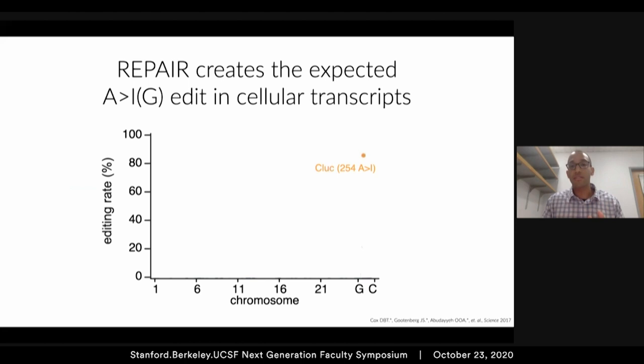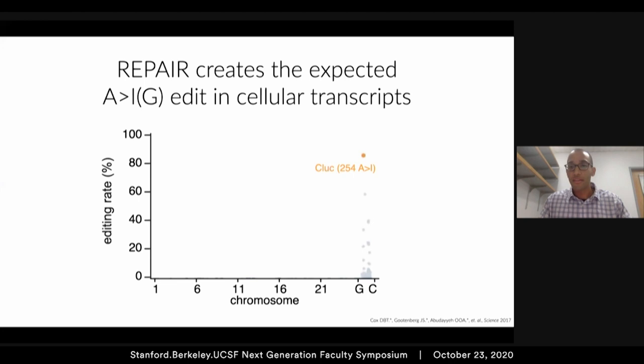When we transfected this system into mammalian cells and measured editing rates by RNA sequencing, we were very happy to see that the targeted edit we wanted was occurring at very high rates — about 85%. But in an RNA sequencing experiment, there's more information than that. We looked at other adenosines within the target transcript and could see off-target edits there — not great. And then we looked throughout the whole transcriptome and could see many other off-targets, up to 18,000. So this would not be useful in a therapeutic context or as a research tool.